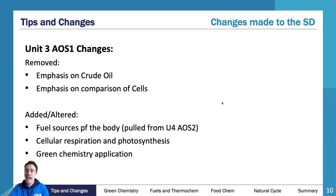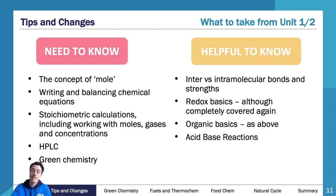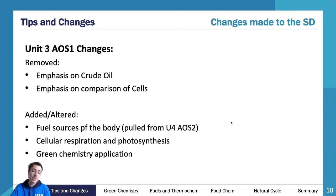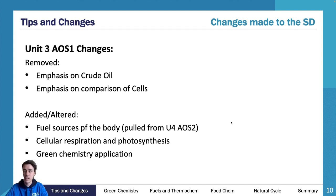What has been added or altered: fuel sources or preferred fuels of the body have been pulled from unit four area of study two — a little bit of that food chemistry has been sifted through. It's one of our subtopics today and we'll discuss it for about 10 minutes. Cellular respiration and photosynthesis has been added — this is brand new. It's our natural cycle, building on fuel sources of the body, looking at the cellular respiration and photosynthesis cycle, along with the green chemistry application that comes with it.